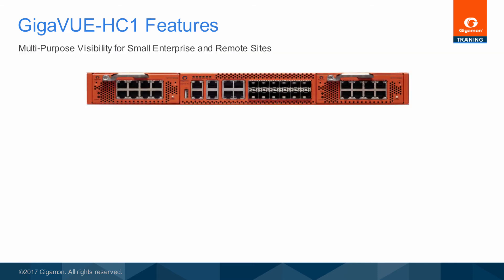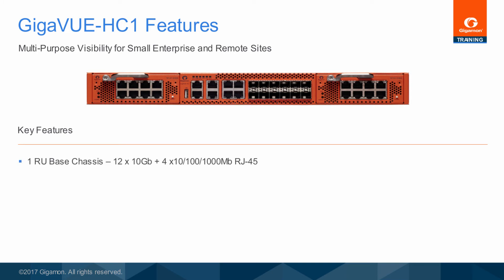The Gigaview HC1 is a multi-purpose Gigaview H-series visibility platform node designed specifically for small enterprises and remote sites. The 1RU chassis provides the following fixed ports: 12 10-gigabit, 1-gigabit SFP-plus network ports and 4 10/100/1000-megabit RJ45 copper ports.